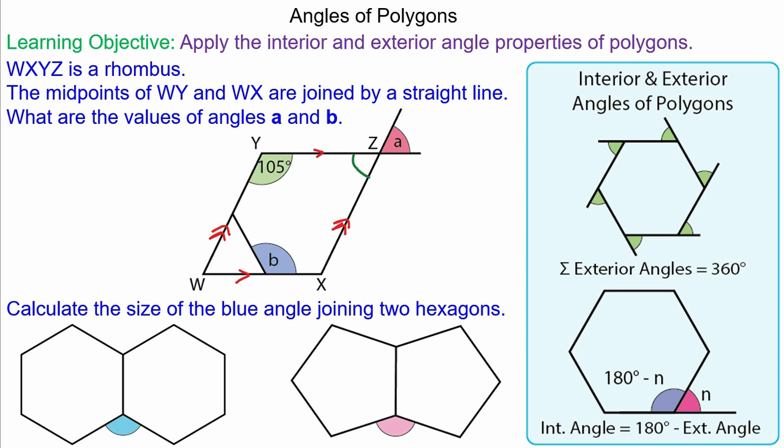Because this angle is interior with angle Y, it would be 75 degrees, and angle X is interior with 75, so that would be 105 degrees. This means we can work out angle a as 75 degrees because it is vertically opposite with this angle here.